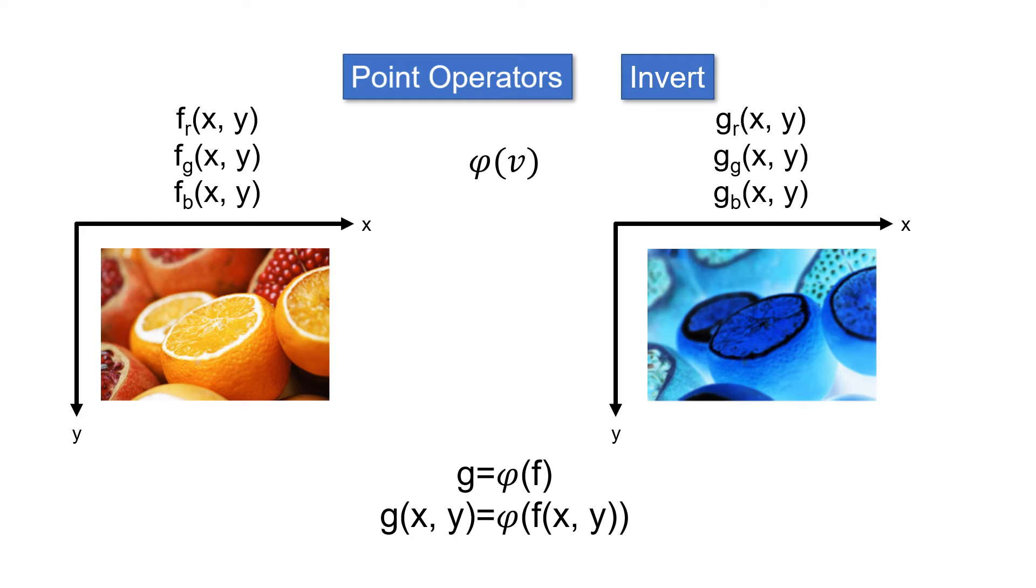Therefore the new image g equals phi of f, and each new pixel g of xy is equal to phi of f xy. For invert, each new pixel color value is 255 minus the original value. This operation can be applied to each color channel to get a new inverted color image.